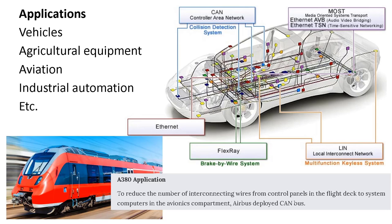As we saw from the history, the development of CAN was made for passenger cars, but nowadays you will see it used in agriculture equipment, aviation, industrial automation, medical devices, and so on.